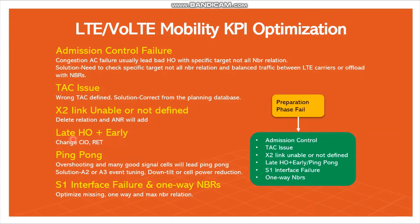If handover failures come under late HO, we have to modify CIO in the positive direction. If it is early handover failure, we have to modify CIO in the negative direction. We can also modify the RET value to optimize late or early handover. For ping-pong handover — where multiple cells at a particular location have equal signal strength — we have to retune the A2 or A3 event value, and we can retune the down tilt or cell power reduction parameters.